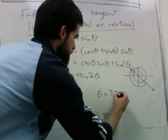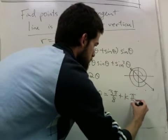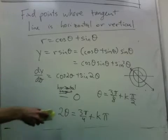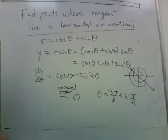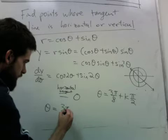Dividing by 2 we see that theta is 3π over 8 plus any multiple. And here again k can be any integer. Let's see what the theta values are between 0 and 2π. We get when k is 0 we get 3π over 8.